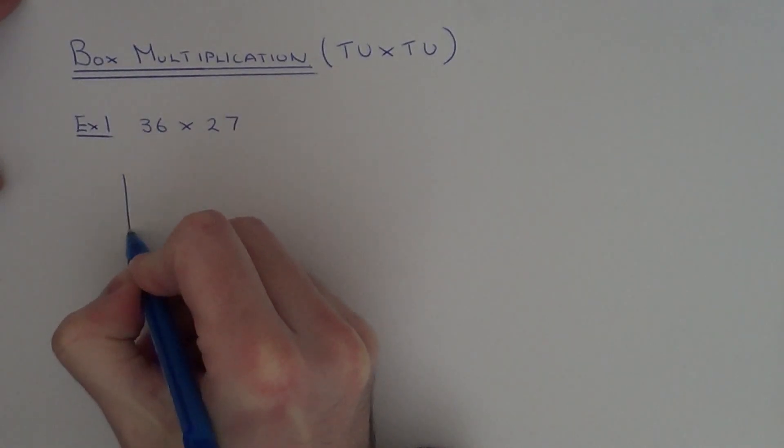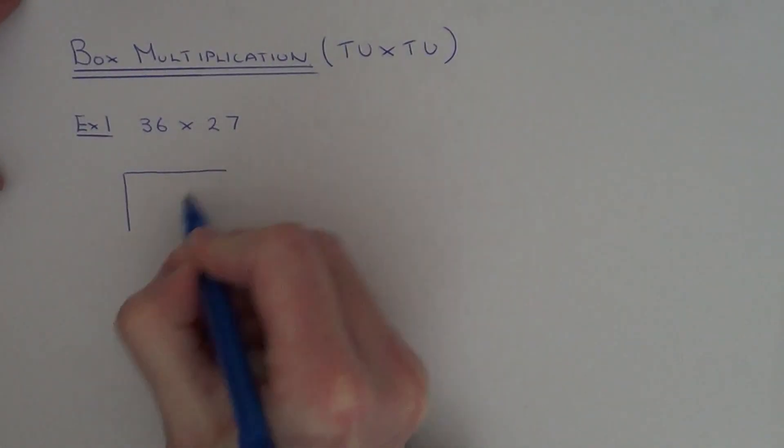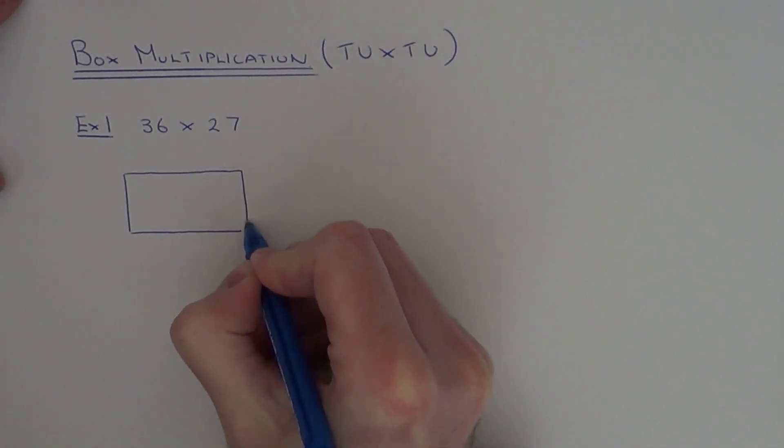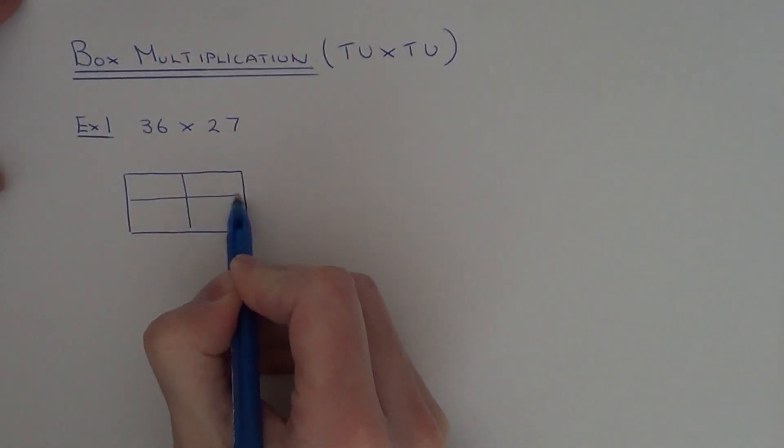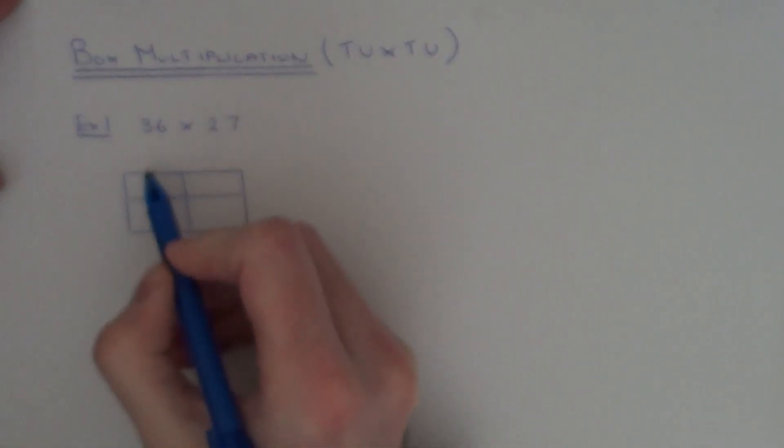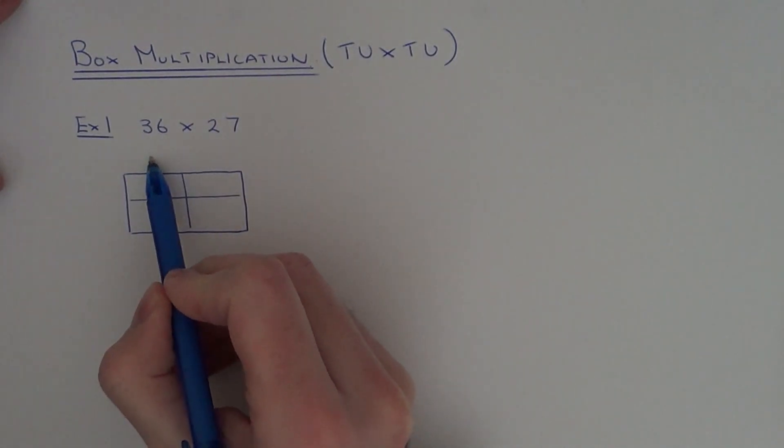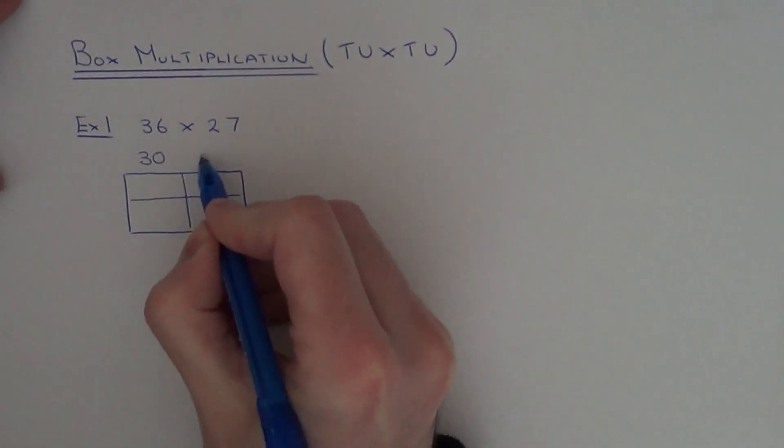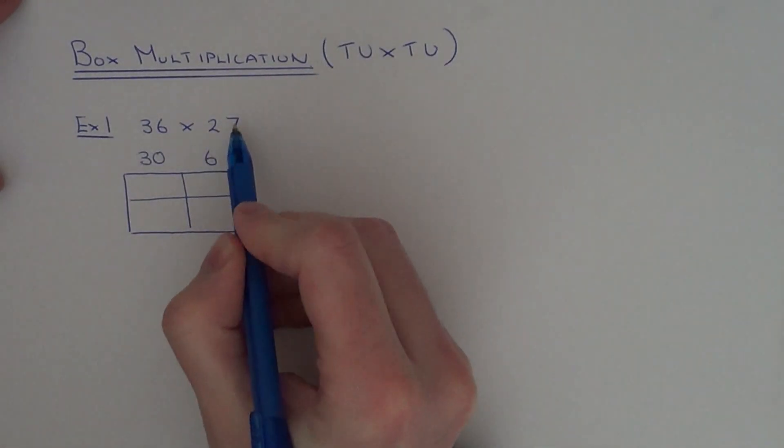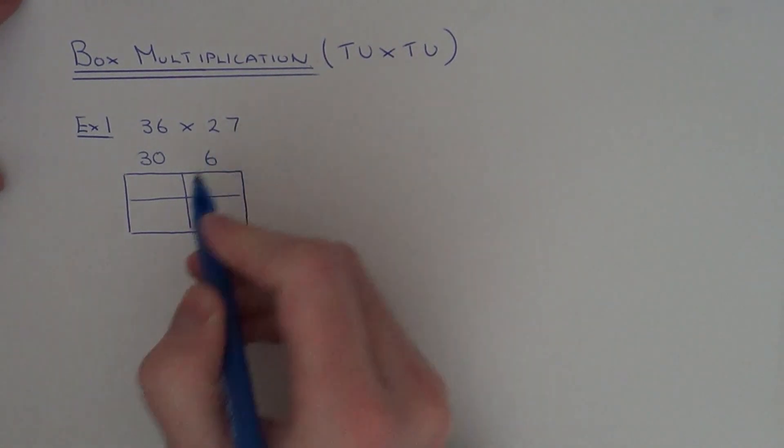So first of all draw yourself a box. So our first number that we had is 36. If we split this number up into tens and units and write this across the box. And our second number was 27. So again split this up into tens and units.